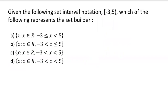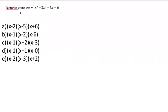Here we're going to create a set builder for the following interval notation. A square bracket means closed and a curve bracket means open. We look at which one has been closed at negative three — that's the first option — and it's open at five. So the answer is A.